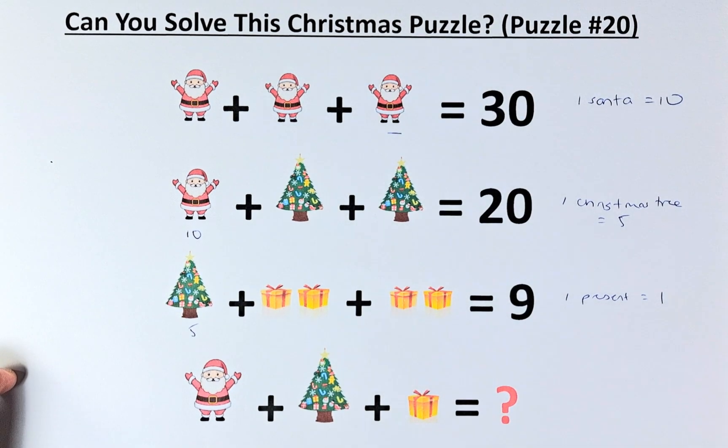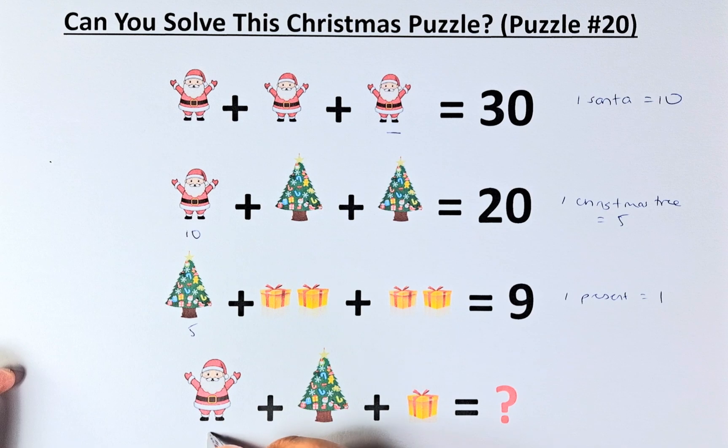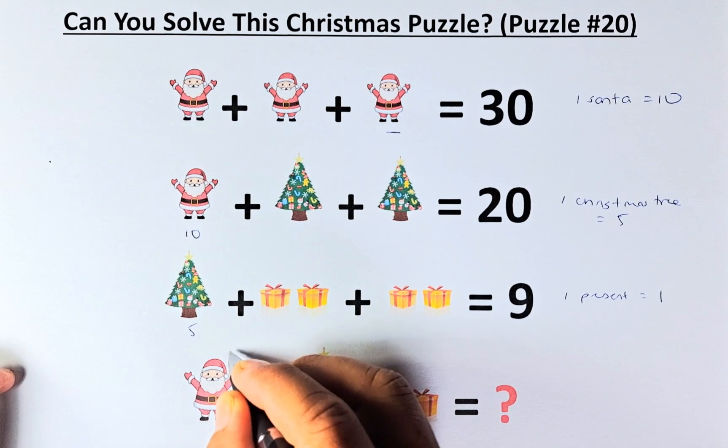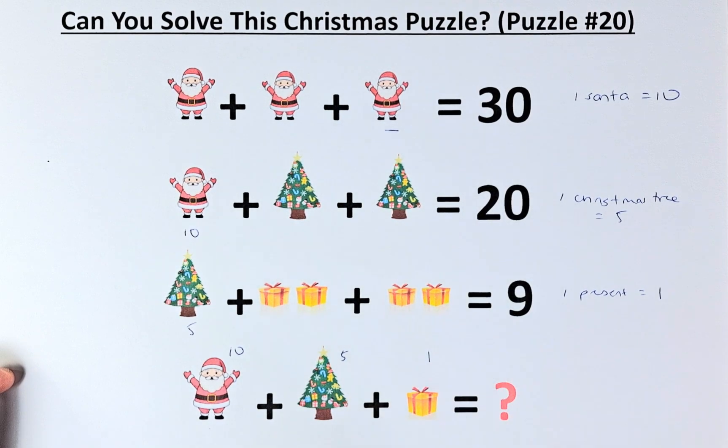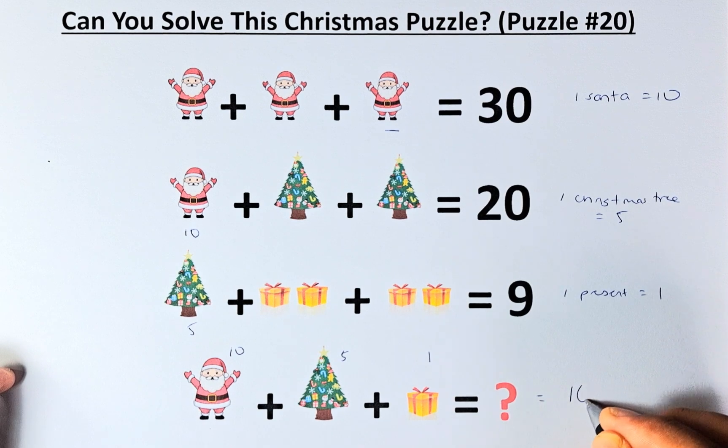So for the question, we have Santa Claus which is 10, a Christmas tree which is 5, and a present which is 1. So 10 plus 5 plus 1, and the answer is 16.